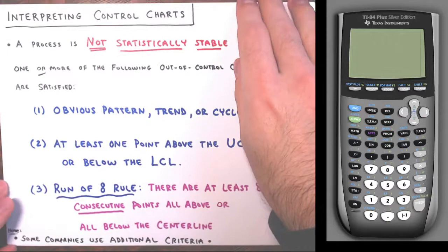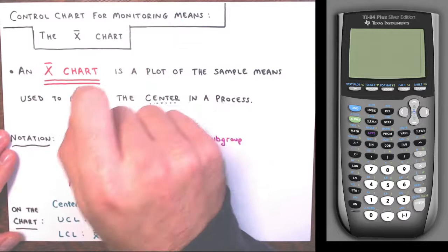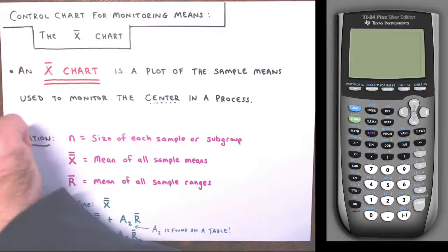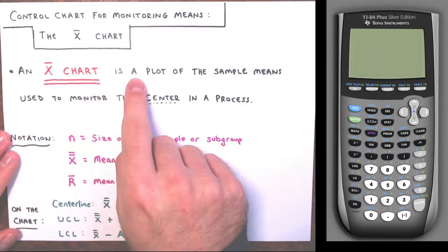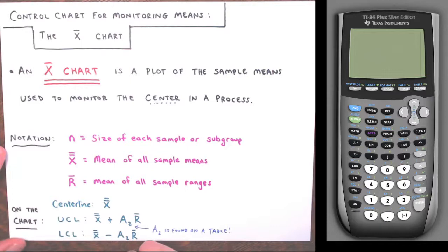Now let's get into the specific X-bar chart — a control chart for monitoring the means, or the center of a process. An X-bar chart, or means chart, is a plot of the sample means used to monitor the center of a process.